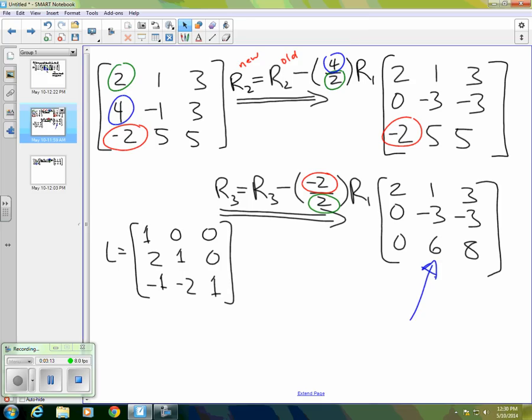So again, the question is, where are those numbers in the lower left corner of L coming from? And if we look carefully, this guy, I'm going to circle this 2 in blue. It's in the same spot as this 4 up here. And if we look at the procedure for obtaining a 0 where the 4 is, what we can see is that our multiplier, in that case, was 4 divided by 2, or 2.